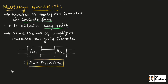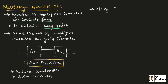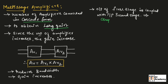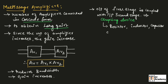One drawback of multi-stage amplifiers is that it reduces bandwidth. So in a multi-stage amplifier, bandwidth reduces while gain increases. The output of the first stage is coupled with the input of the second stage using a device called a coupling device. This coupling device can be a resistor, inductor, capacitor, or a transformer.